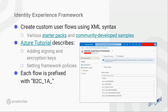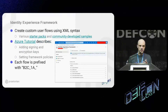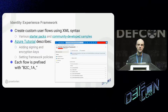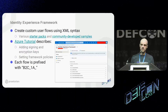To set up user flows, you can use something called the Identity Experience Framework. Essentially, you provide XML syntax user flows, upload them to your Azure portal instance, and they configure how users log in — entering email, password, MFA, whatever you have. There are starter packs and community-developed samples you can download from GitHub and install. In particular, there's a tutorial about signing and encryption keys and how to set up these policies. The image here is set up using the basic starter pack, which has things like profile editing, password resets, sign up, and sign in.